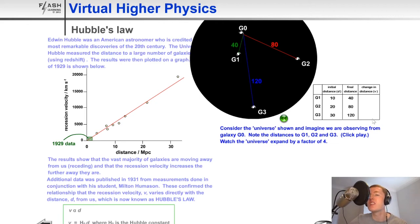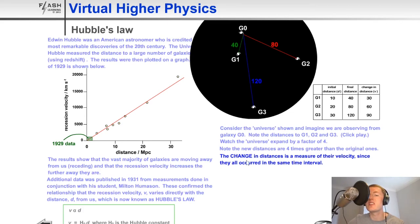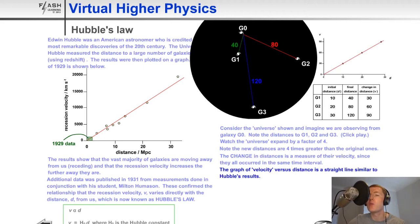And now we could work out that change in distance which is going to be proportional to the velocity. And that's what it says here. So the change in distances is a measure of their velocity since they all occurred in the same time interval. So we've got a change of 30, 60 and 90 megaparsecs and if we now look at that on a graph it would look like this with a linear relationship between recessional velocity V and initial distances of the galaxies D which was this column here. So you'll notice the straight line linear relationship between V and D there.